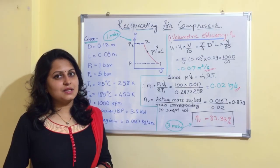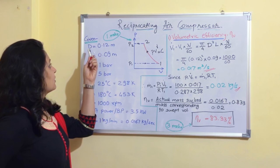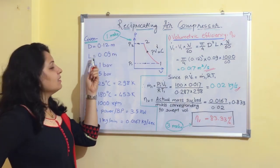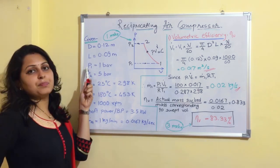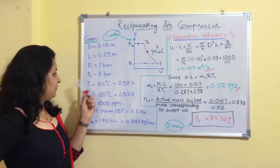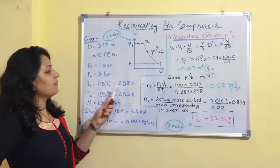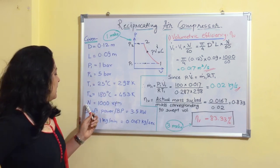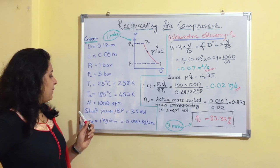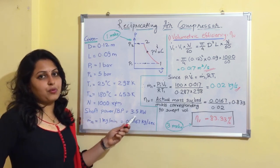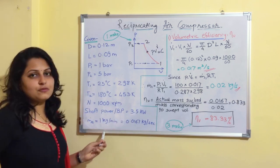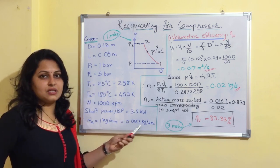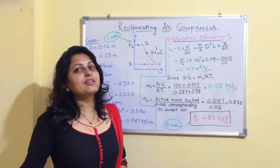Given data: diameter D = 0.12 m, stroke L = 0.09 m, pressures P1 = 1 bar and P2 = 5 bar, temperatures T1 = 298 K and T2 = 453 K, N = 1000 RPM, shaft power = 3.5 kW, and mass flow rate = 1 kg/min = 0.0167 kg/s. Let us find the first term: volumetric efficiency.